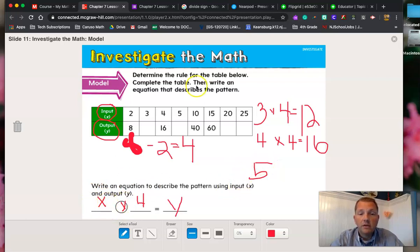Four is my known. Five times four, and then my y turns into the answer. So five times four is going to give me twenty.